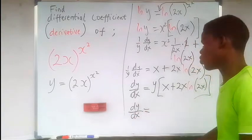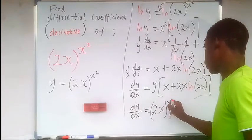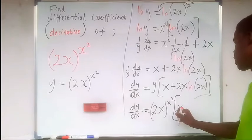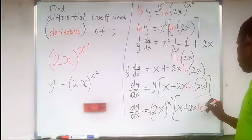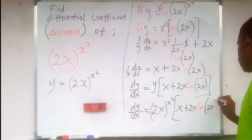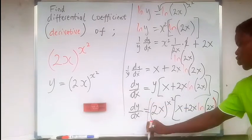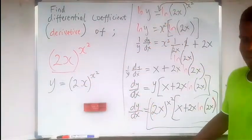So our final solution is now dy/dx is equal to - what is the value of y? That is (2x) raised to the power of x² times [x plus 2x ln(2x)]. So this is the differential coefficient of this matter. That's it.